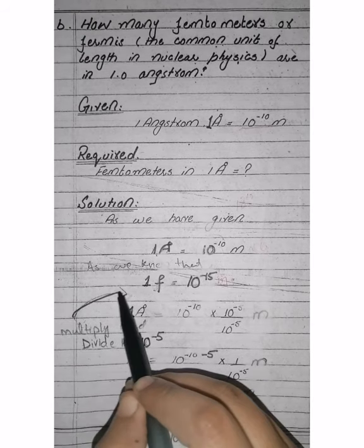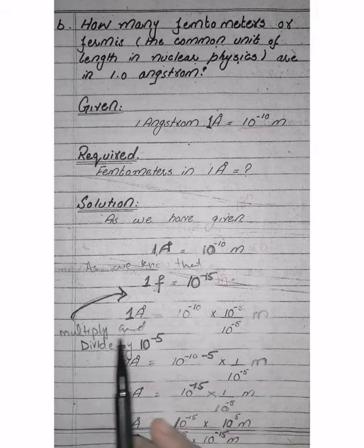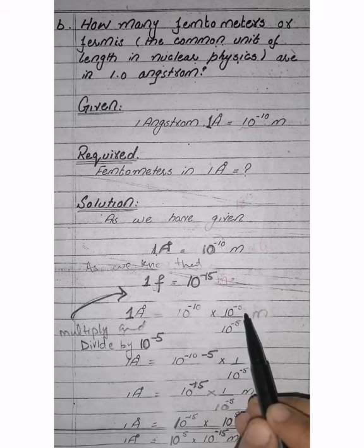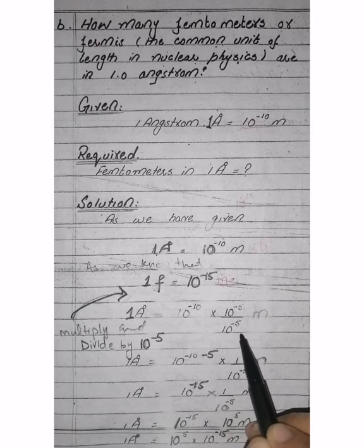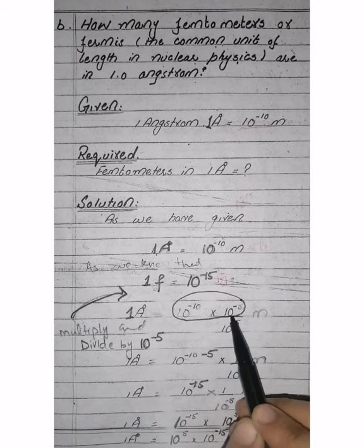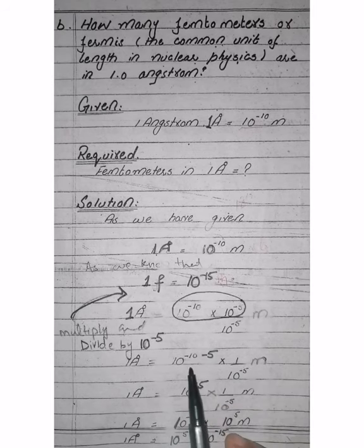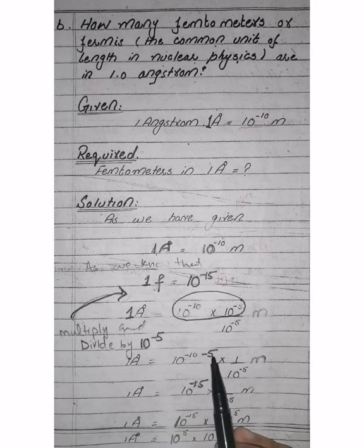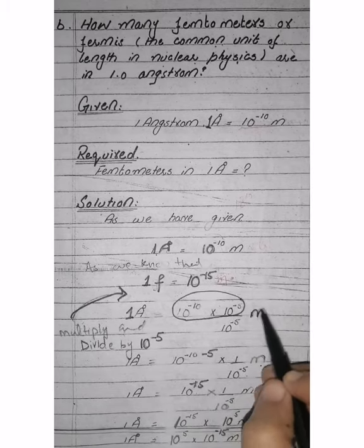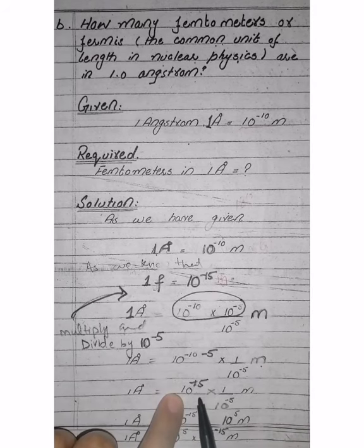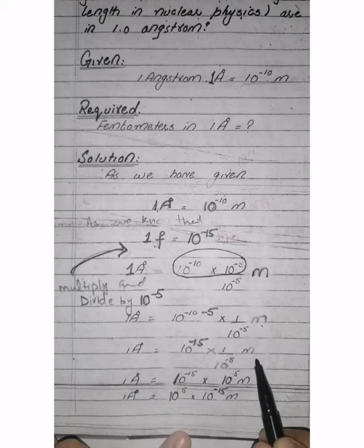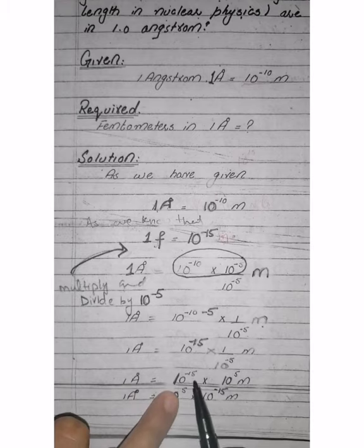In the multiplication, since the bases are the same, the powers add. So 10 raised to the power of minus 10 multiplied by 10 raised to the power of minus 5, multiplied by 1 divided by 10 raised to the power of minus 5, with meters in its place. Minus 10 plus minus 5 gives 10 raised to the power of minus 15, and then multiplied by 1 divided by 10 raised to the power of minus 5 meters. One angstrom is equal to 10 raised to the power of minus 15 into 10 raised to the power of minus 5.